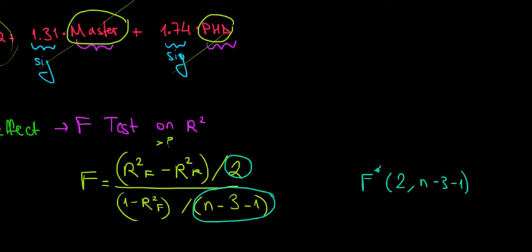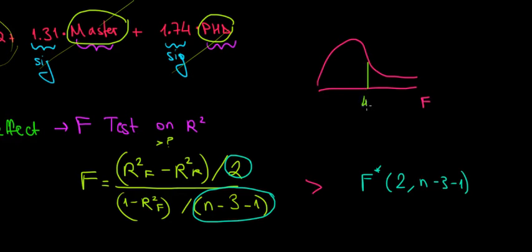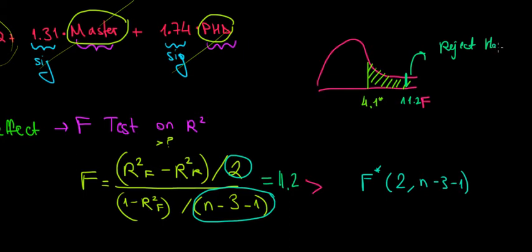Assuming our F value is larger than the F critical value — on the F distribution, the rejection region is to the right. For example, let's say the F critical value is 4.1 and our F value is 11.2, which falls in the rejection region. So we would reject the null hypothesis. Rejecting the null hypothesis means that adding the two dummy variables to the model helps explain the model better and increases the R-squared significantly, meaning there is a joint effect of the education levels.